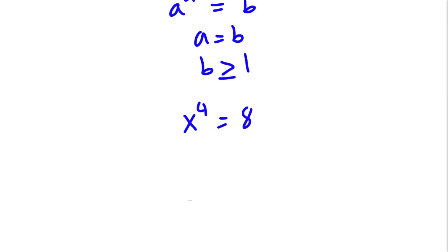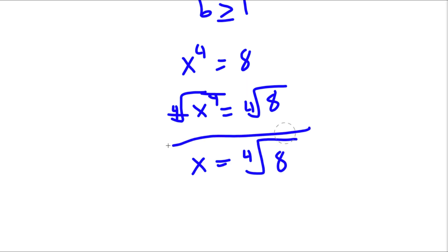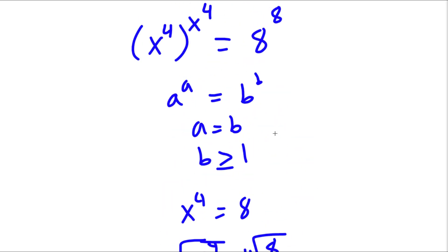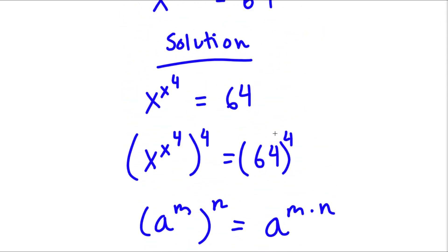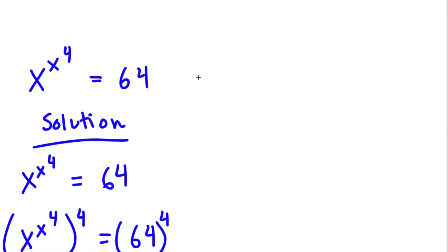So now to solve this, I'm going to take the fourth root on both sides. These two will cancel out, and I'll be left with x is equal to the 4th root of 8. Our original equation was x to the power of x to the power of 4 is equal to 64, and x is equal to the 4th root of 8.